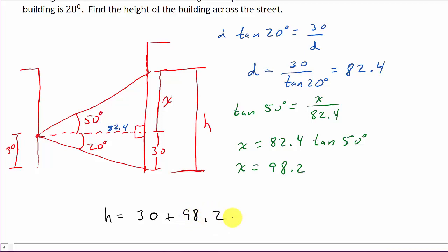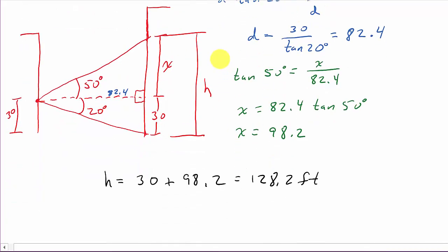And so, 30 plus 98.2, that is going to be 128.2 feet. And that is feet, right? Yes. And we're in feet. So, that's the height of the building.